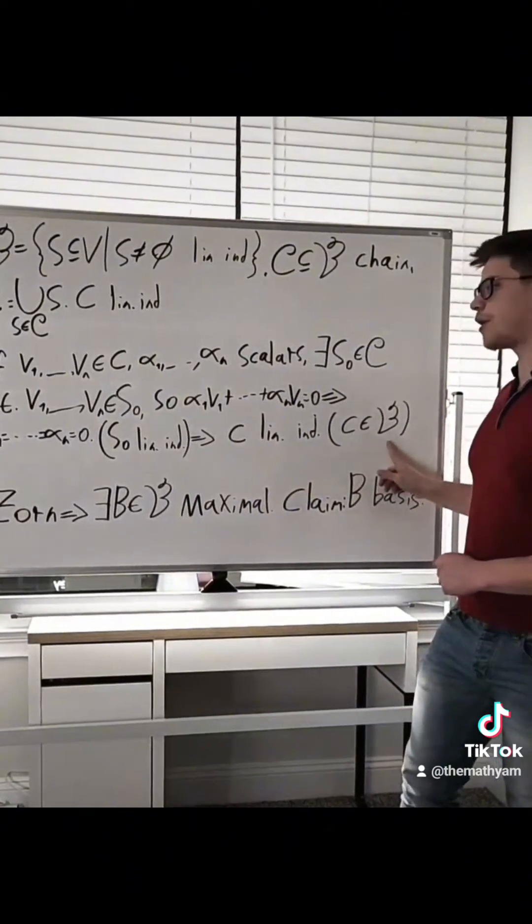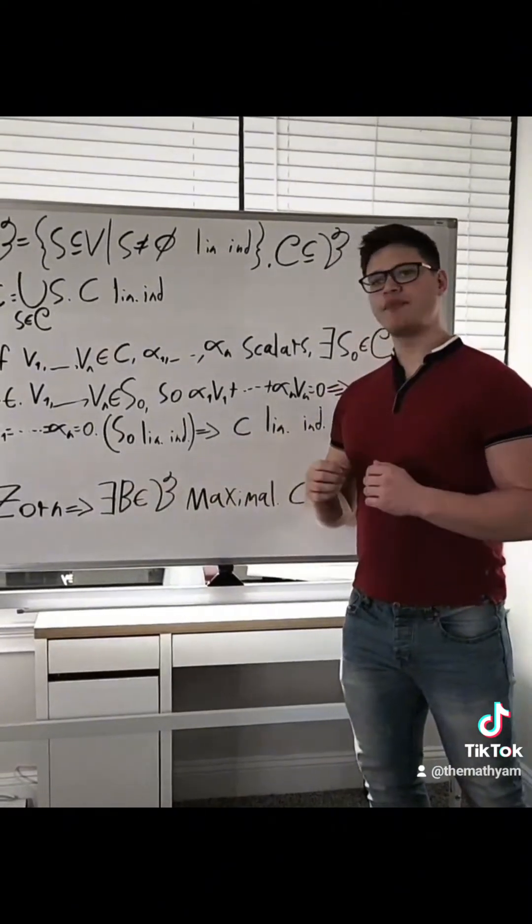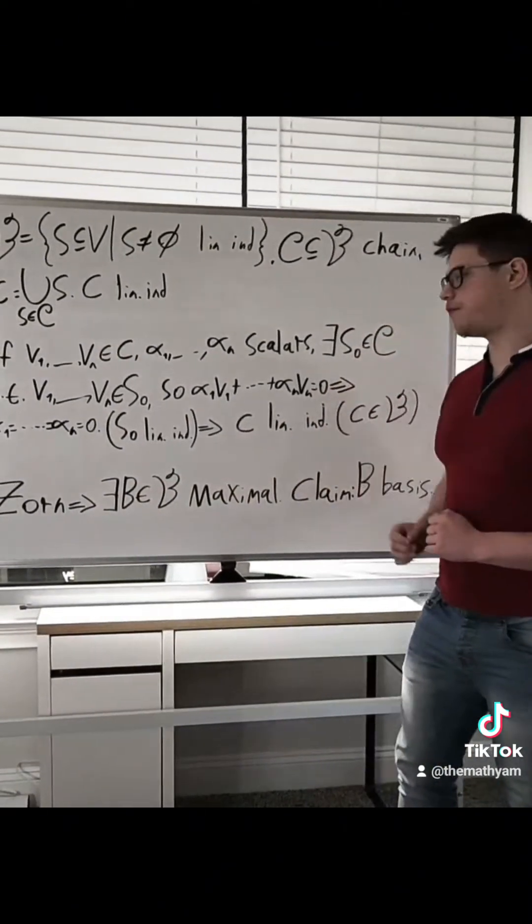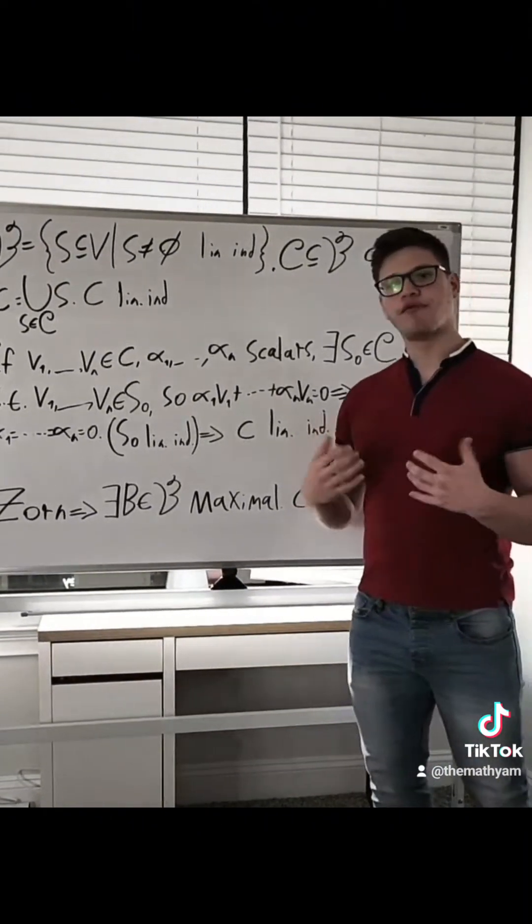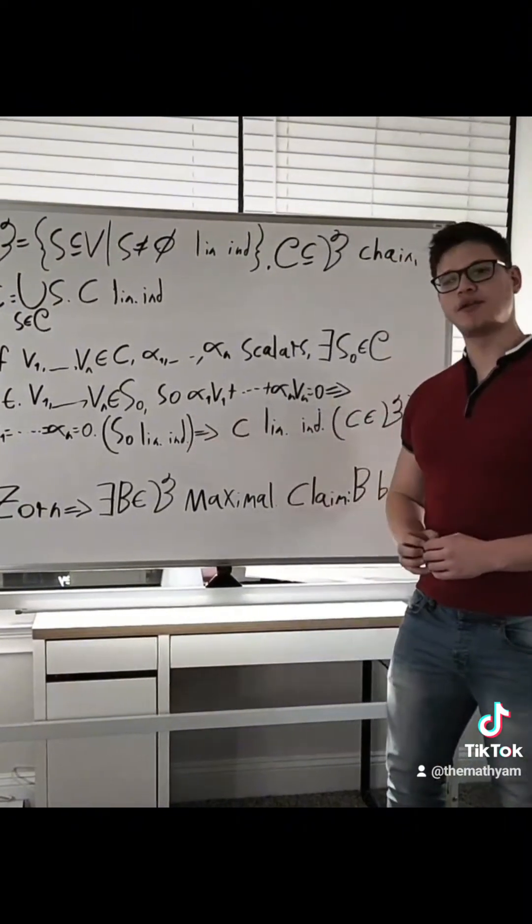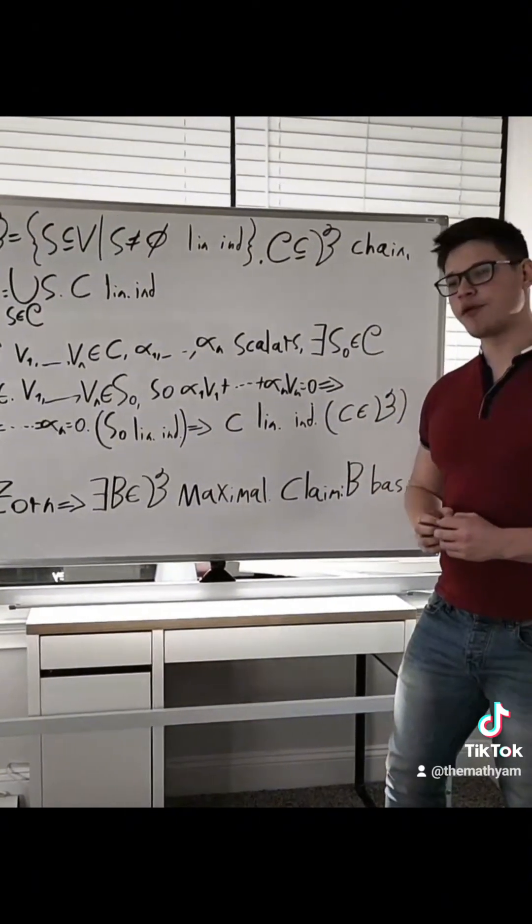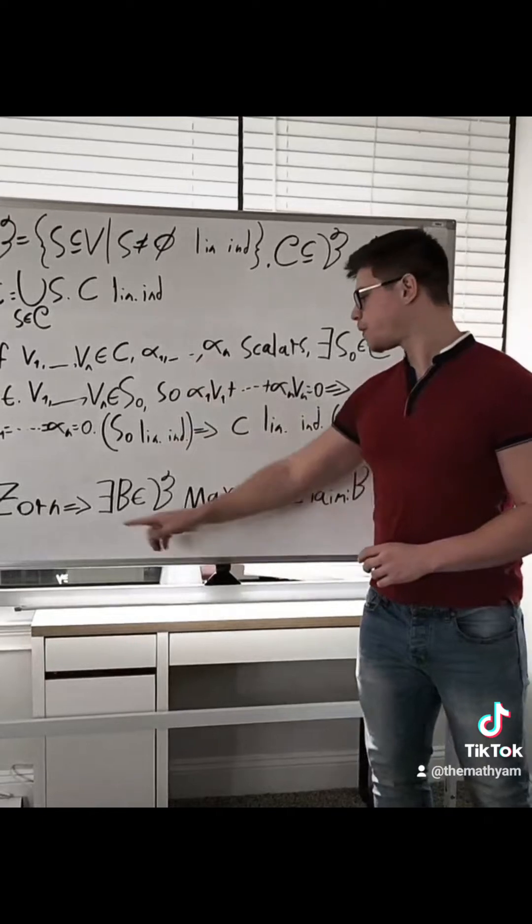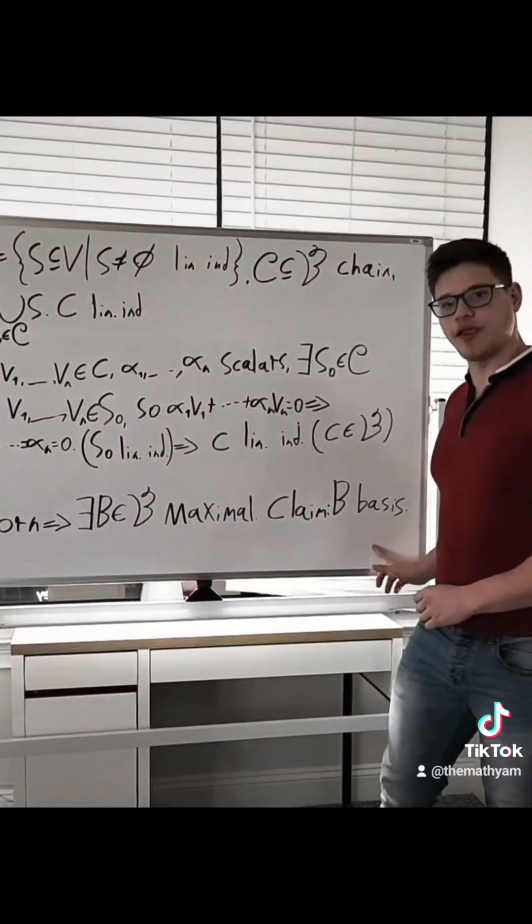So we conclude that C is linearly independent. In other words, C is inside of B. This allows us to use Zorn's Lemma to claim that there is a maximal element inside of B, so a maximal linearly independent set. Now, some of you might have seen that in linear algebra, sometimes a basis can be defined as a maximally linearly independent set, but we will also prove this. So there is this B in B, maximal, and we claim that B is a basis of V.